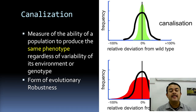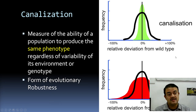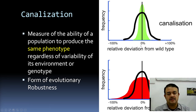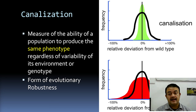Another related term is canalization — a measure of the ability of a population to produce the same phenotype regardless of variability in its environment or genotype. Even if the environment is varying, the phenotype remains the same. It is essentially the opposite of phenotypic plasticity. In canalization, relative deviation from the wild type is very low — shown as the green color in the diagram. With capacitance, more variants exist but remain cryptic until needed. Canalization is another form of evolutionary robustness, just like capacitance.